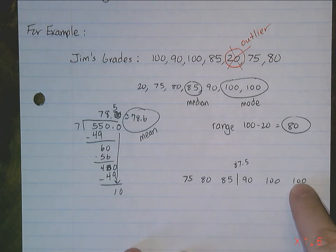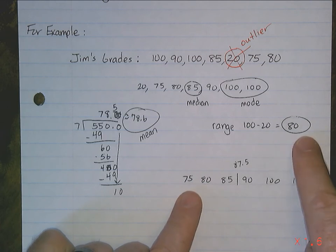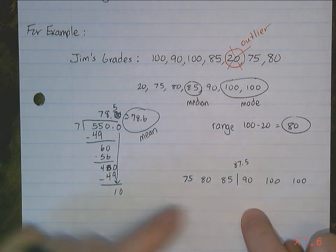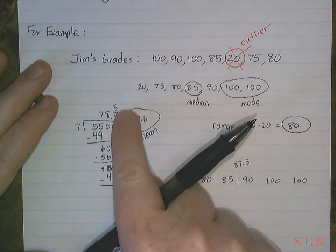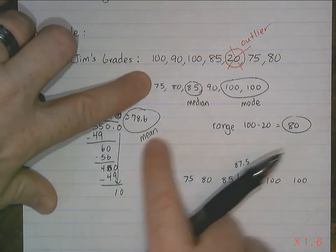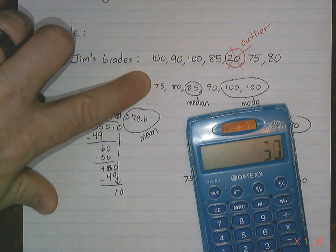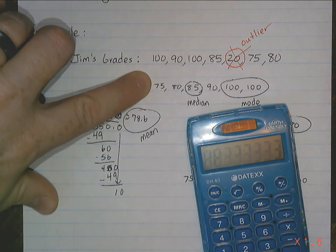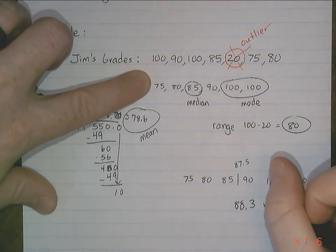Let's take a look at the range. The range would be 100 minus 75. The range would be 25. So the range would be affected dramatically. And the last one is the mean. So the mean, remember, it was 550 with all the numbers. So if we didn't have that 20, 550 minus 20 is 530. So 530 divided by 6. 530 divided by 6, 88.3. So 88.3 would be the average, would be the mean.